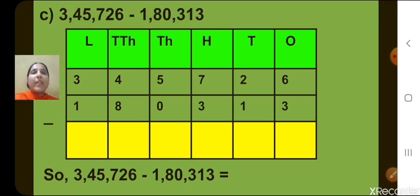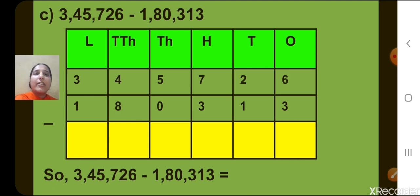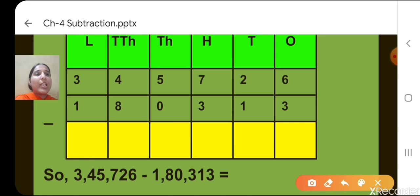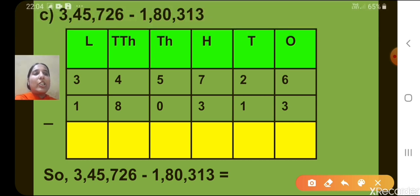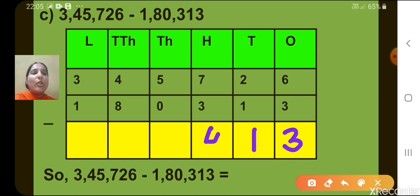Question number C: the minuend is 3,45,726 and the subtrahend is 1,80,313. Let's start from the 1's column. 6 minus 3, what will we get, children? 3. Now let's move to the 10's column. 2 minus 1, we get 1. Now let's move to the 100's place. 7 minus 3, we get 4. Now let's move to the 1000's column. 5 minus 0, we get 5.